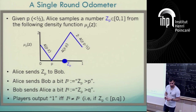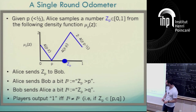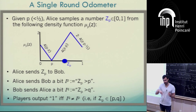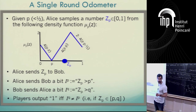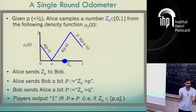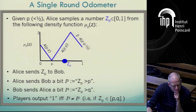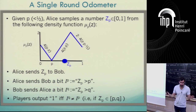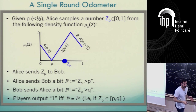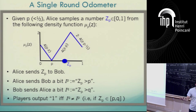So is the protocol clear? Alice samples using private randomness this random variable between zero and one according to this density function. Then the players exchange indicators indicating whether the sample fell between their numbers P and Q, and they click — output one — if the number fell between their numbers, basically if their indicators disagree.